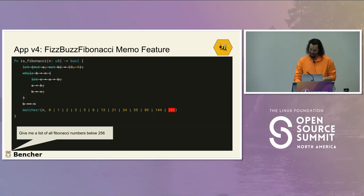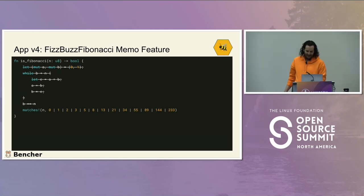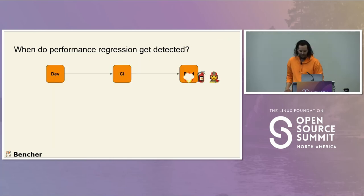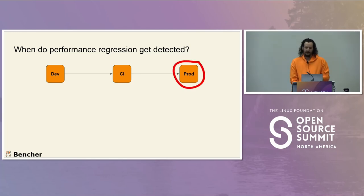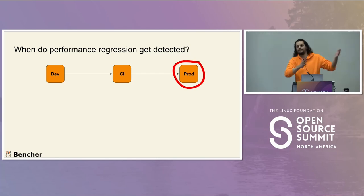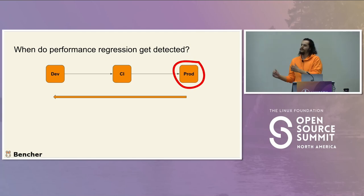So we create version four of our app. We cross out the Fibonacci calculation and just hard-code the values — because there really aren't that many Fibonacci numbers below 256 to worry about. Now it's good. We're able to put the fire out and save the day. But why do we have to wait until production to catch this? We should try and shift this as far left as we possibly can.